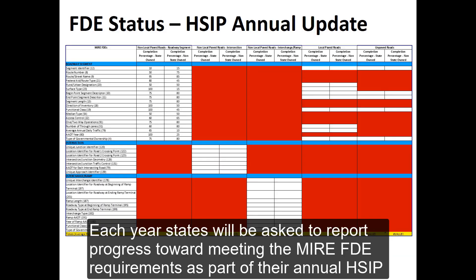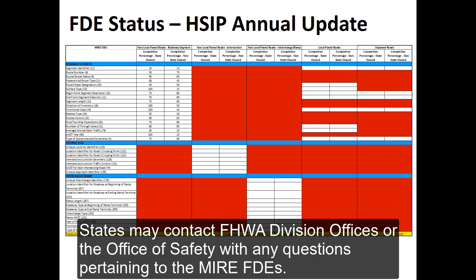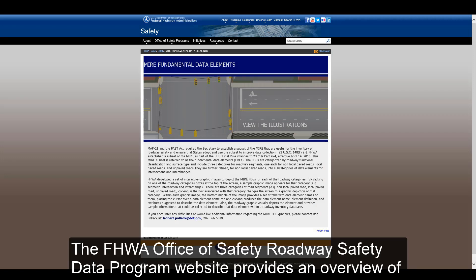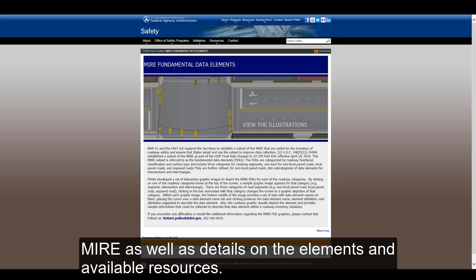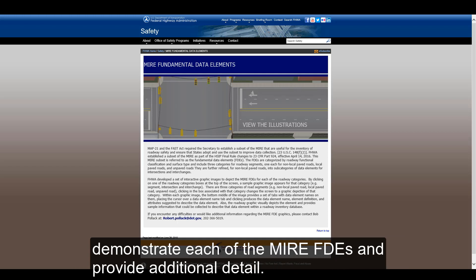Each year, states will be asked to report progress toward meeting the MIRE FDE requirements as part of their annual HSIP report due each August, using a template provided by FHWA. States may contact FHWA Division Offices or the Office of Safety with any questions pertaining to the MIRE FDEs. The FHWA Office of Safety Roadway Safety Data Program website provides an overview of MIRE, as well as details on the elements and available resources. FHWA has also developed a series of interactive illustrations to help further demonstrate each of the MIRE FDEs and provide additional detail.